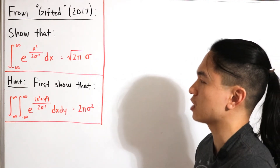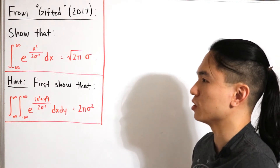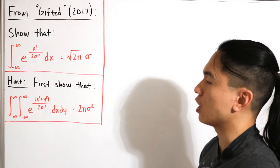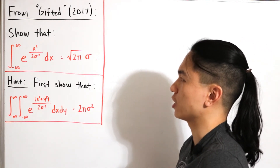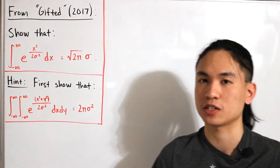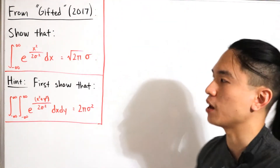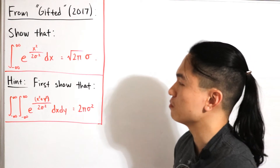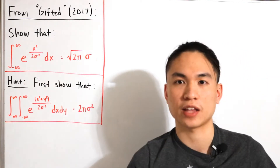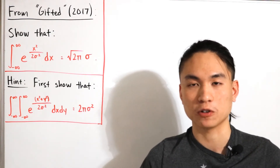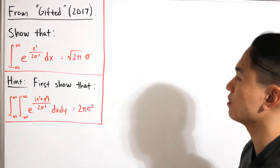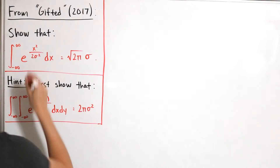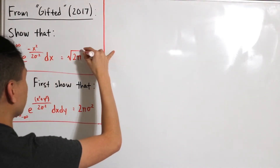This improper integral appears in a scene where Mary Adler is asked by a professor to solve the integral — or rather, prove that the left-hand side equals the right-hand side. As she points out in the film, there is a mistake in the problem that makes it unsolvable: a missing negative sign in the exponent. Without it, the integral diverges. Additionally, the absolute value sign on sigma is also missing.